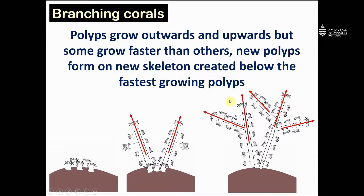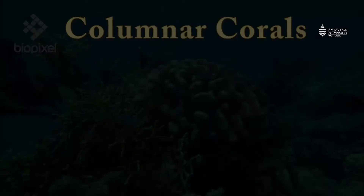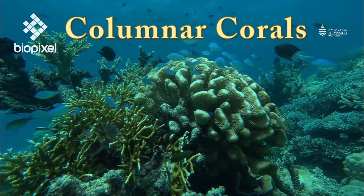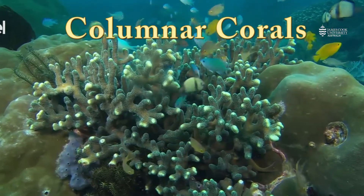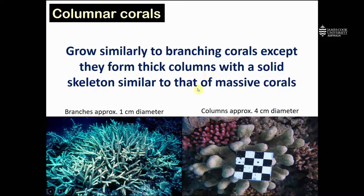Over time, the branches can get longer and new branches can branch off from the existing structures, so these branching corals form arborescent, or almost tree-like, structures underwater. Columnar corals grow similarly to branching corals, except they form thick columns with a solid skeleton, which is quite similar to that of massive corals. On the left we have a branching coral where the branches are approximately one centimeter in diameter, and on the right we have a columnar coral where the branches or columns are approximately four centimeters in diameter.